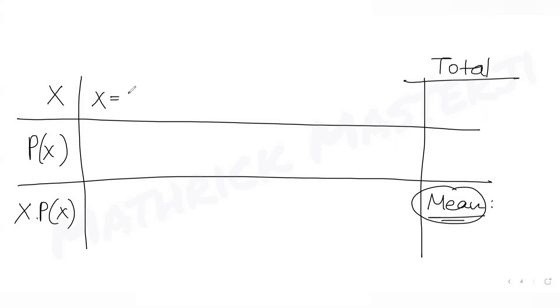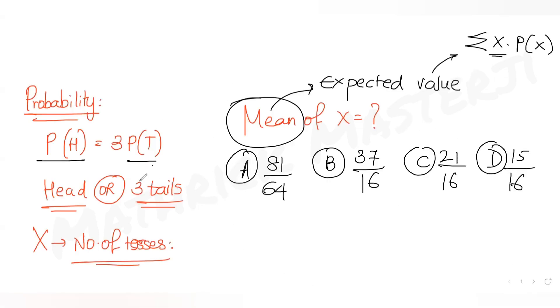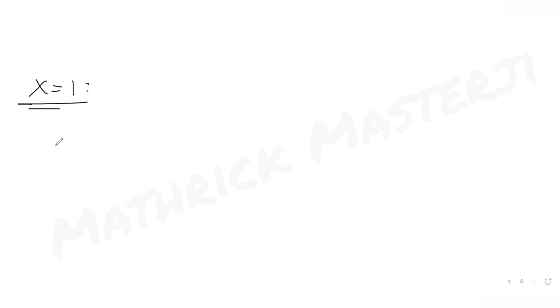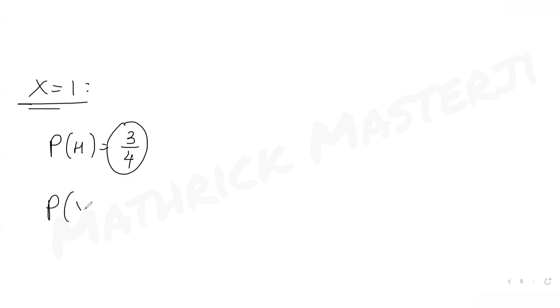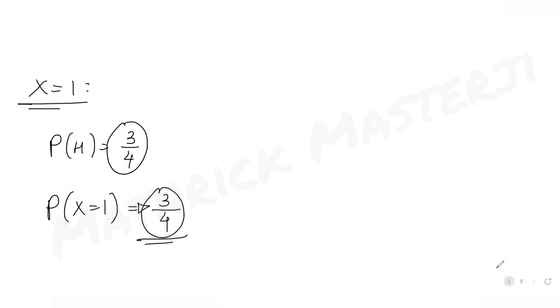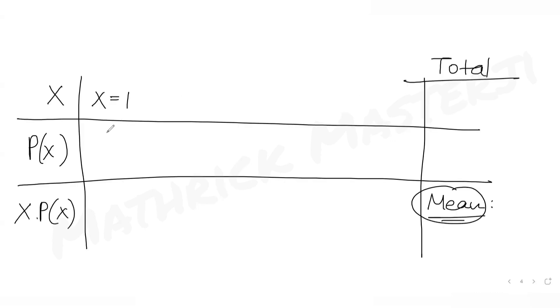If the number of tosses required is 1, I cannot get 3 tails in just 1 toss. So with 1 toss, I must get a head on the first toss itself and stop the experimentation. So at X equals 1, probability of X equals 1 is just probability of heads, which is 3 over 4.